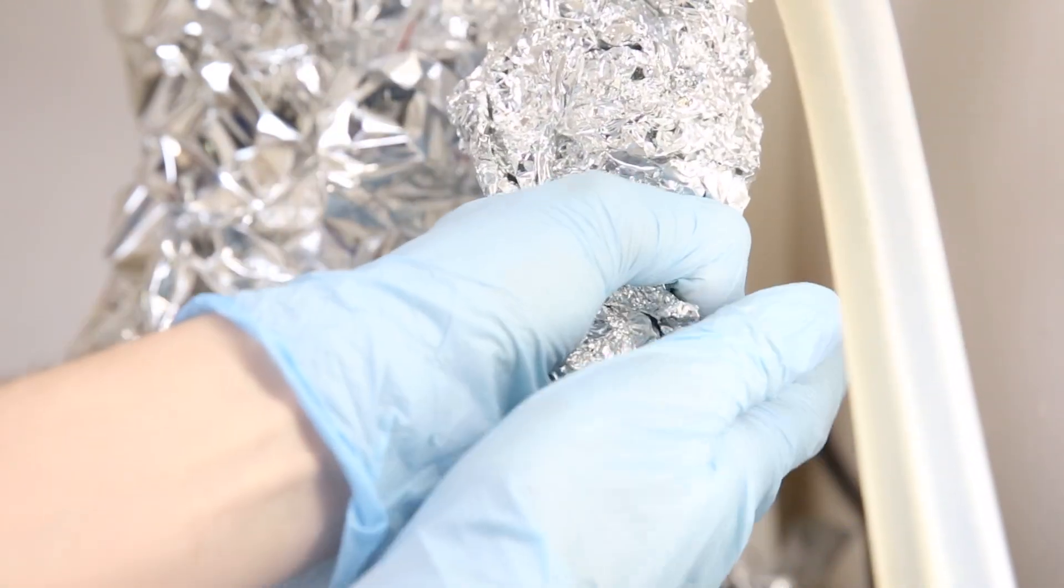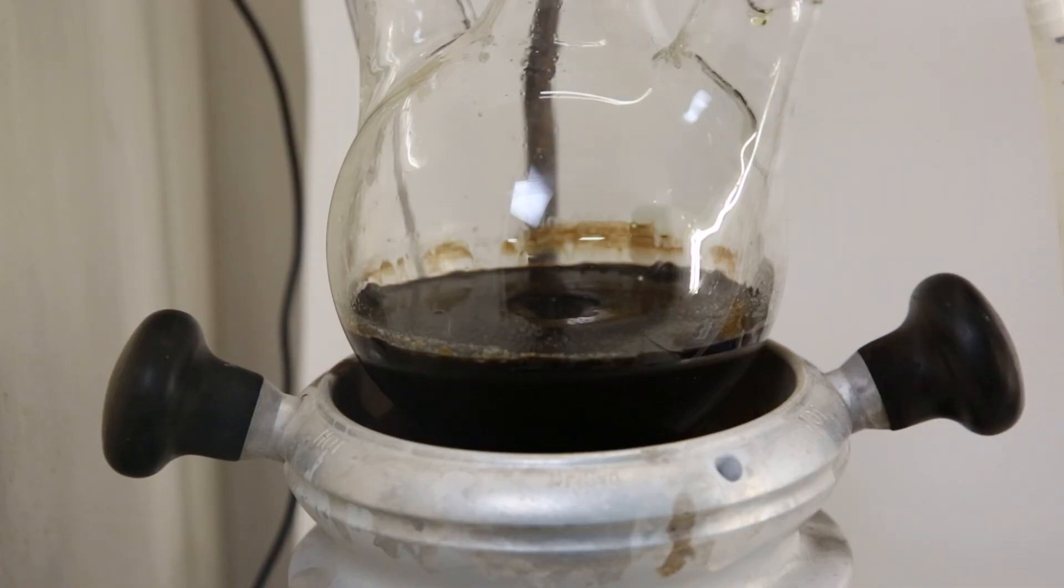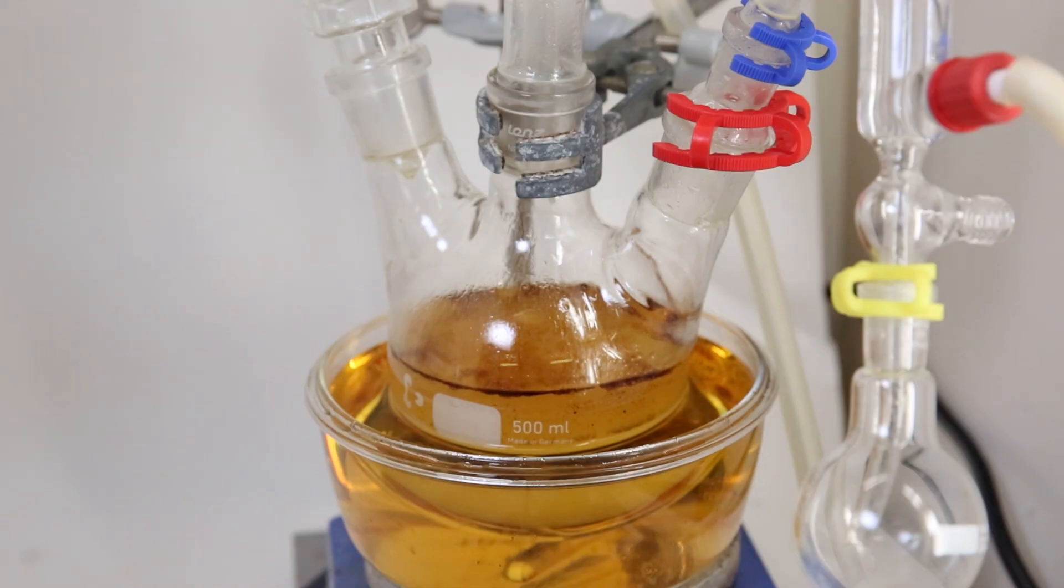I do this process a few more times until I feel like not much more is coming over. After I am done, all that is left in the flask is a thick black tar and the first receiving flask has a lot of liquid in it.